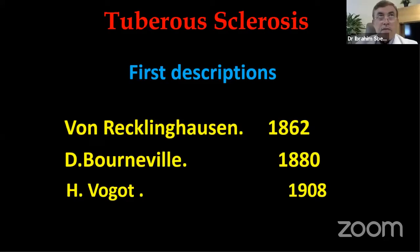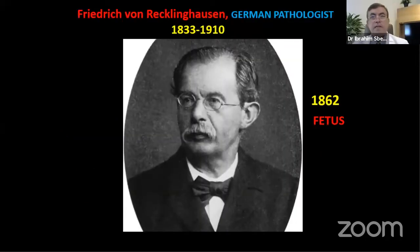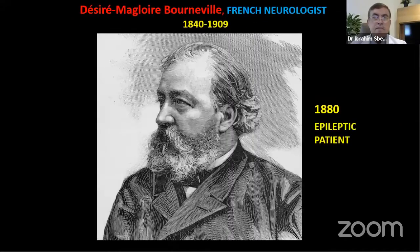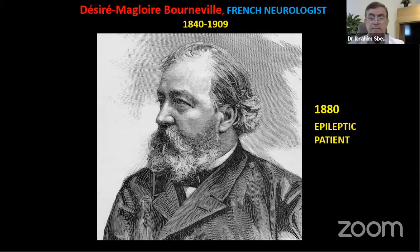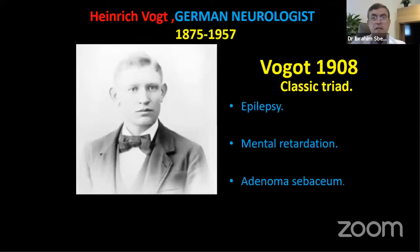Tuberous sclerosis was described by a few people. Von Recklinghausen in 1862 described a fetus who died and was found to have brain lesions. Bourneville in 1880 had an epileptic patient who died, and post-mortem examination showed potato-like masses in the brain. Then Vogt in 1908 described the classical triad of epilepsy, mental retardation, and adenoma sebaceum.